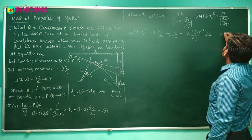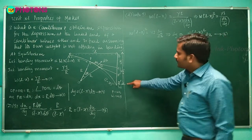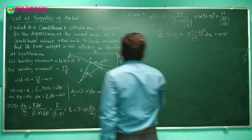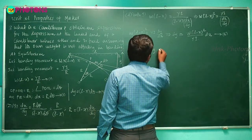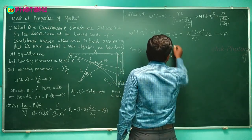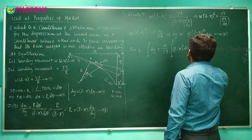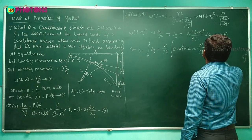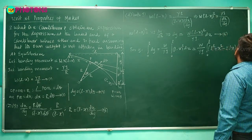To get the entire vertical depression y, integrate Equation 5 from 0 to L: y = integral from 0 to L of [W(l − x)² / YI] dx. Taking W/YI as common, we integrate (l − x)² from 0 to L.